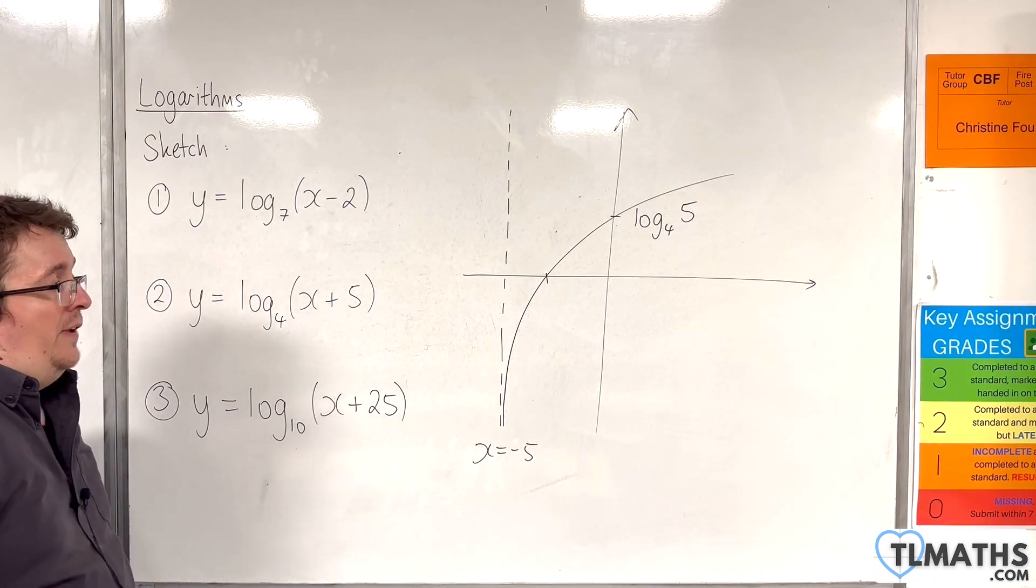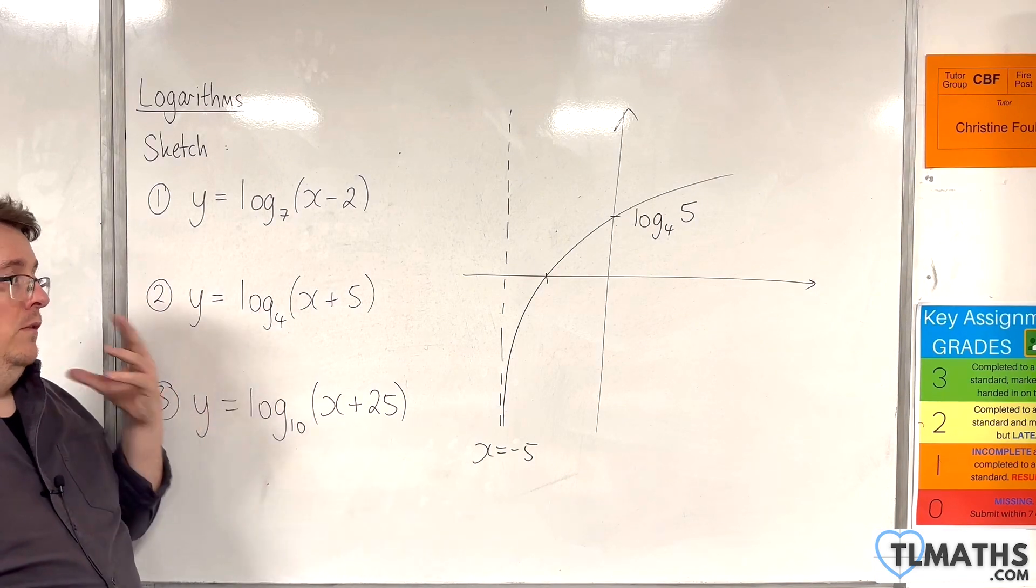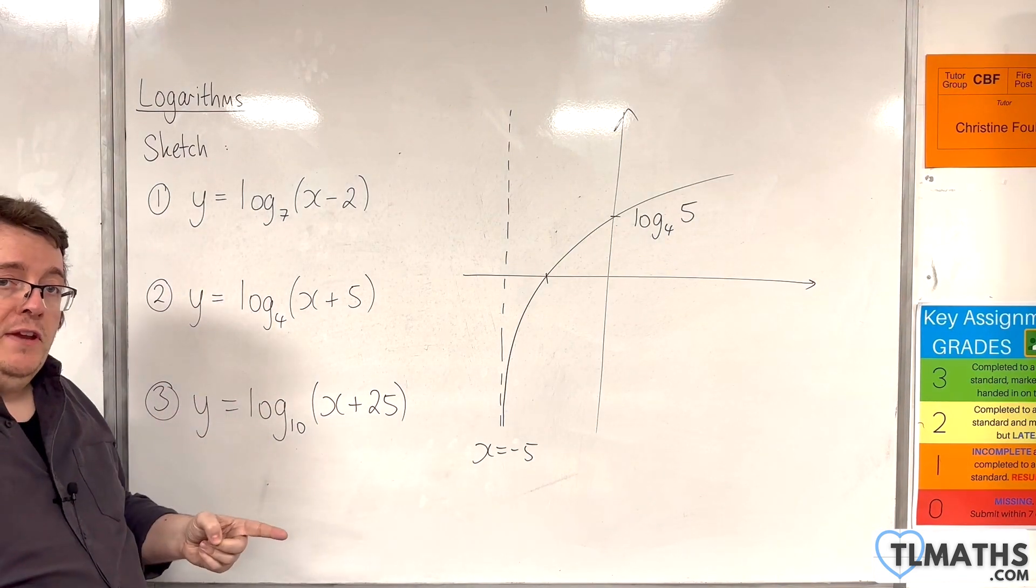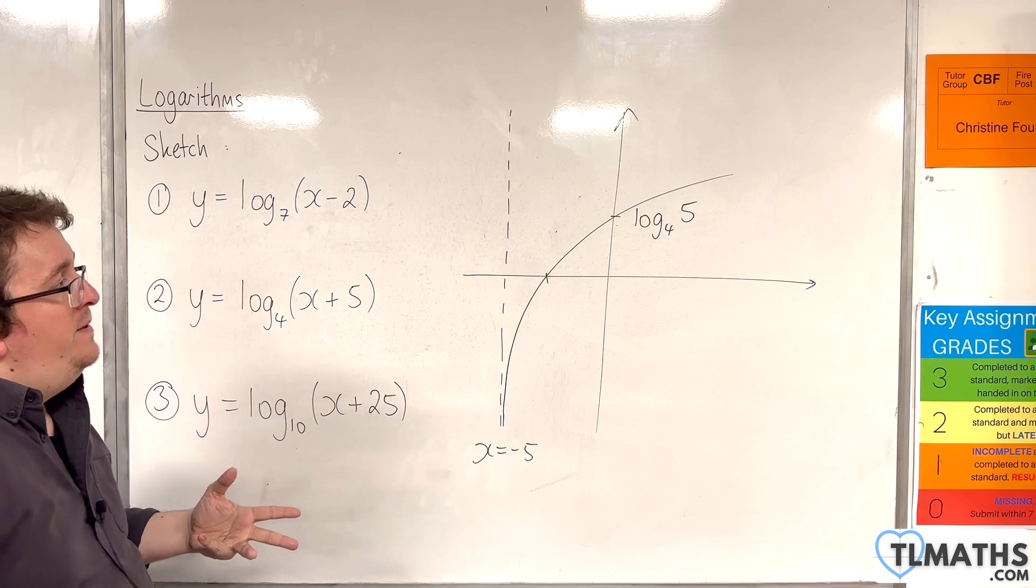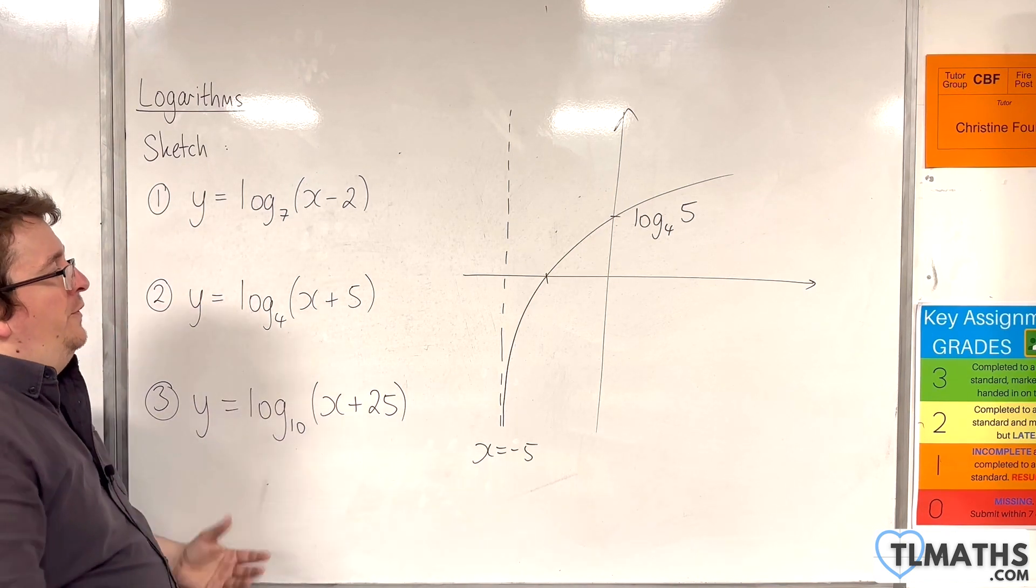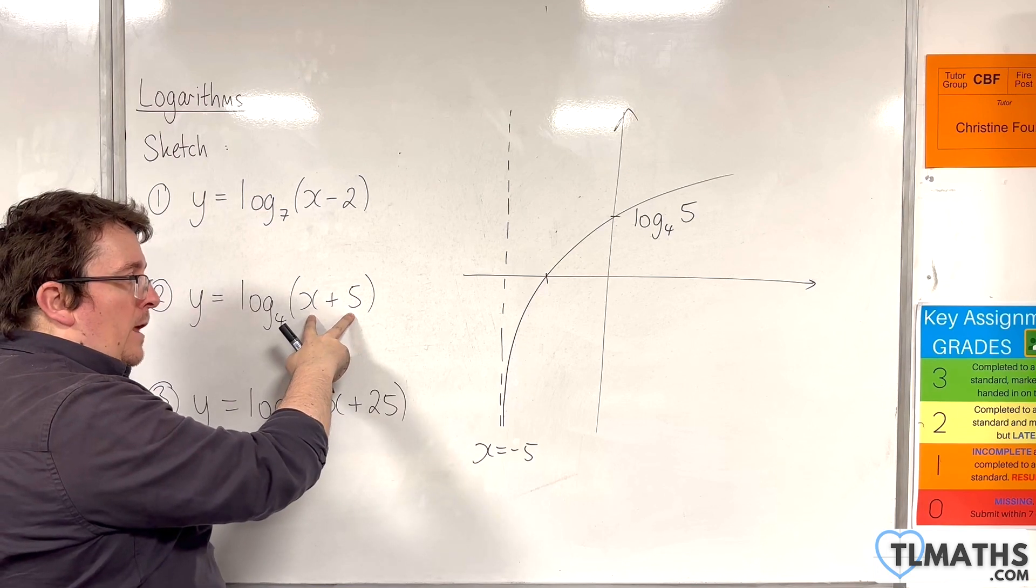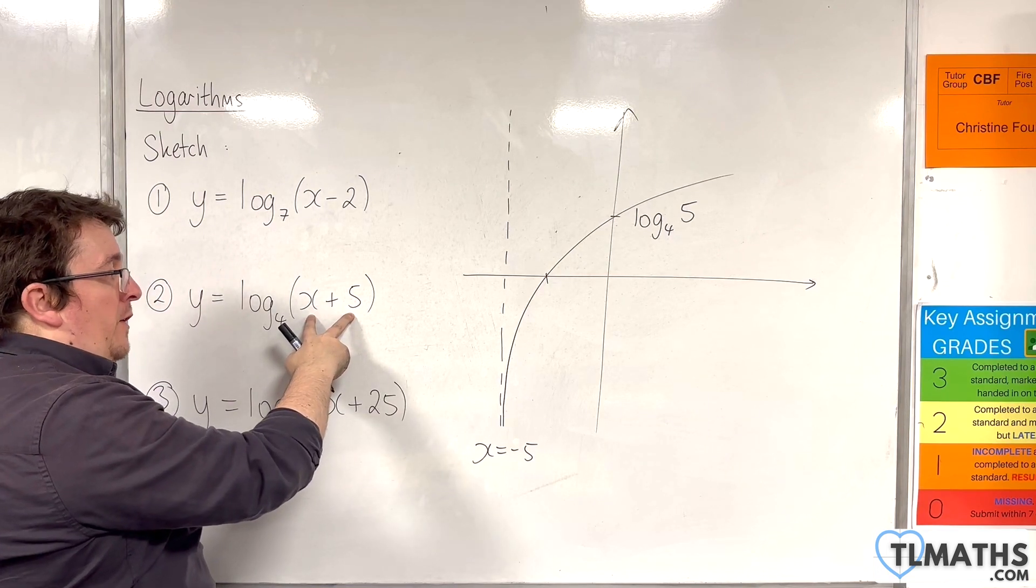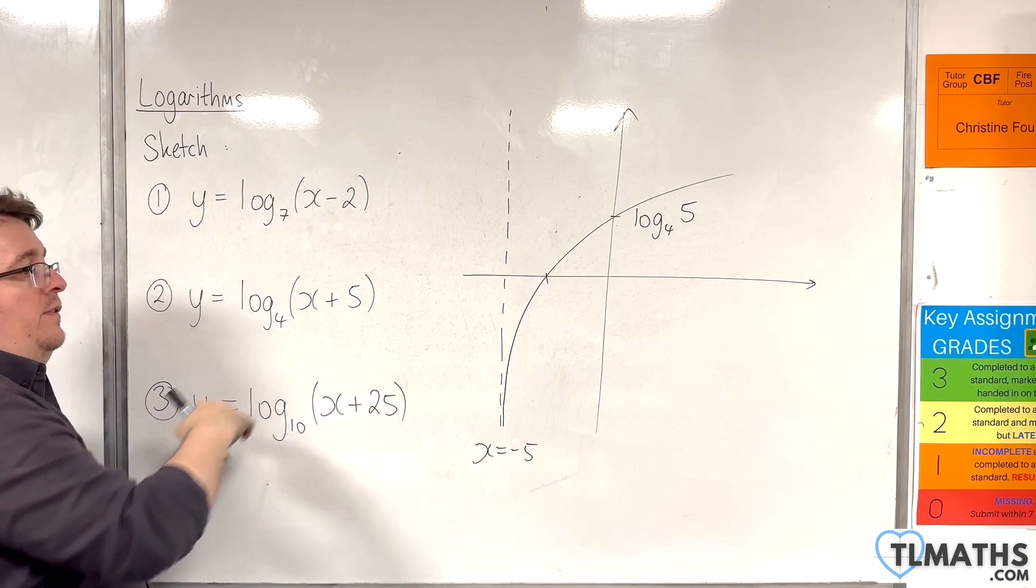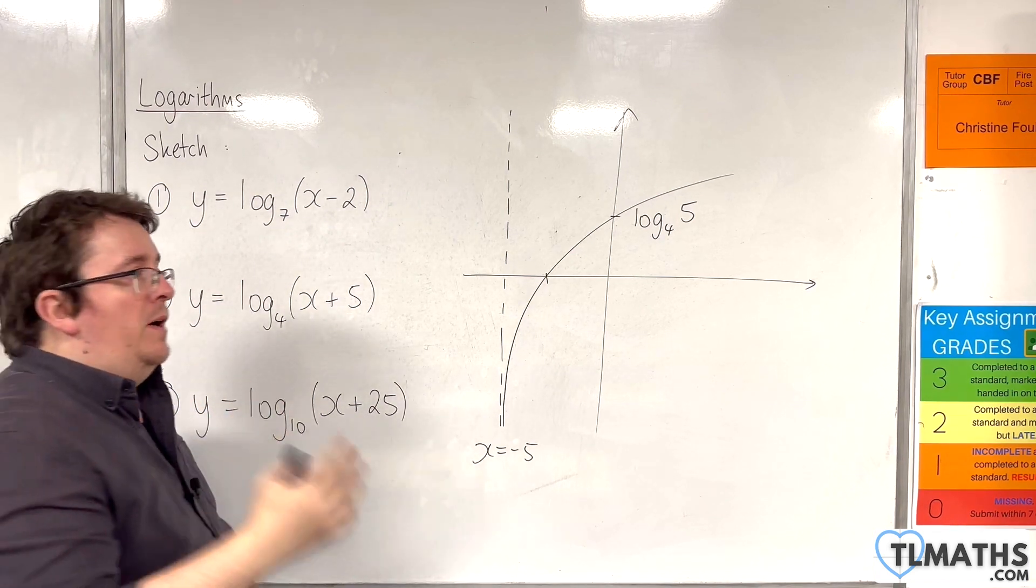And where does it cross the x-axis? Now, you could put y equals 0 and go about it the same way we've been doing. Or if you're more confident, that is when x plus 5 is equal to 1. So if x plus 5 is equal to 1, then x has to be equal to minus 4.